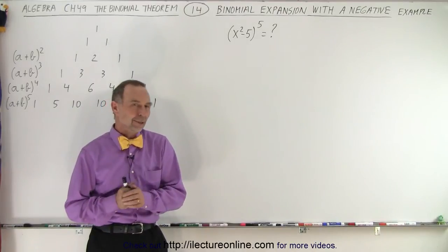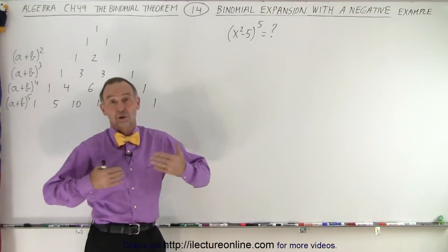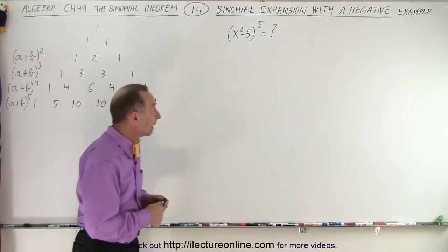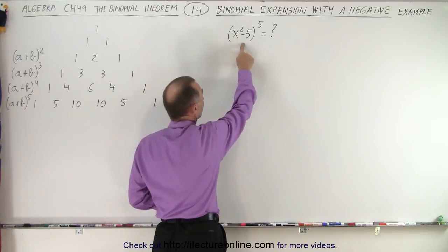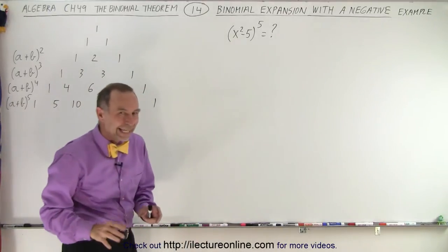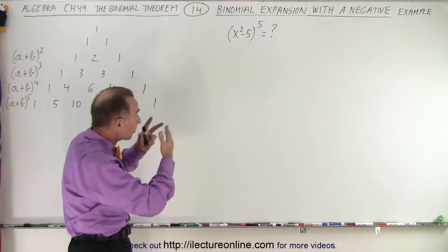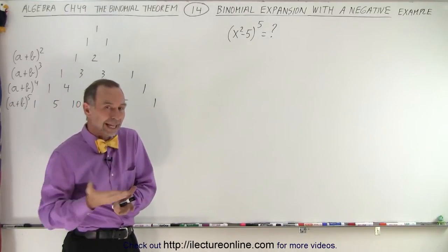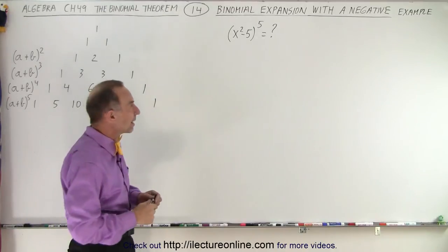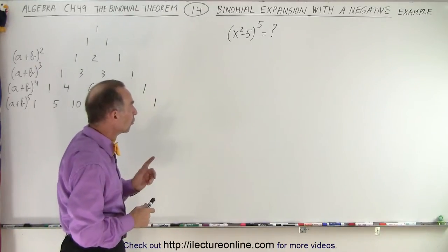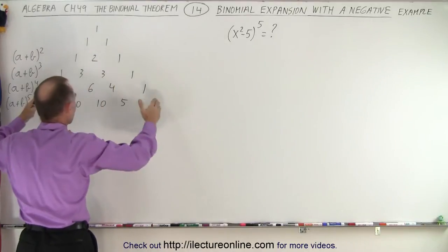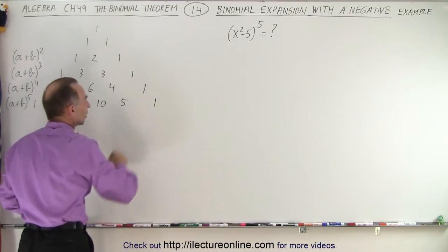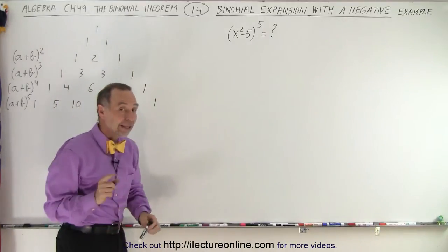Welcome to ElectronLine. In the previous video we showed you the shortcut method to find the binomial expansion when we had a negative sign in between the two terms of our binomial instead of a positive sign. In this example it's a little bit more complicated — we're actually going to work through it, and you'll see the alternating plus and minus signs. We're going to use Pascal's triangle, whose coefficients of our expansion are given right here.